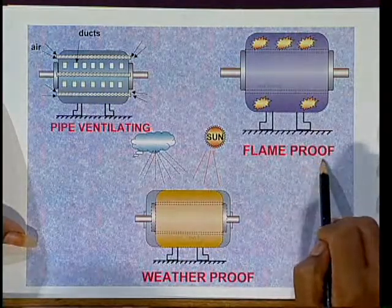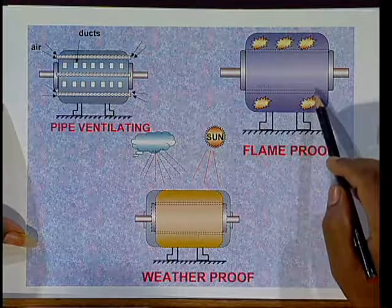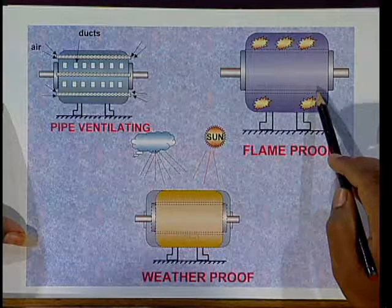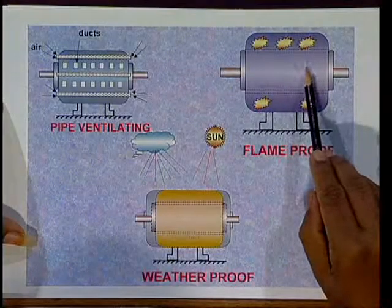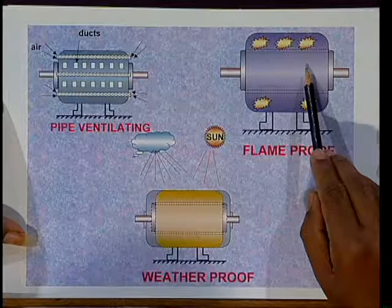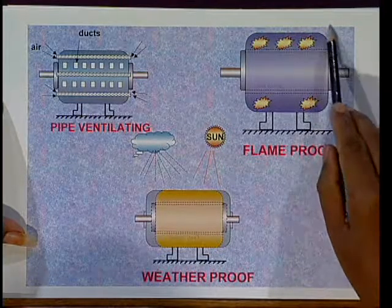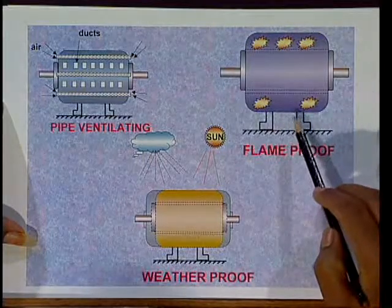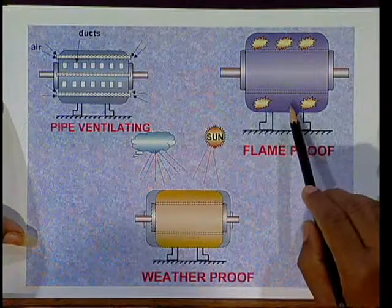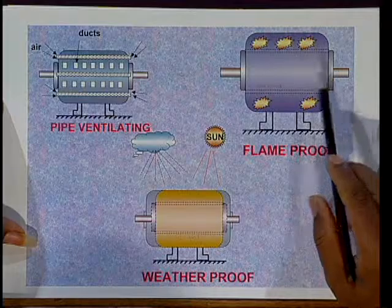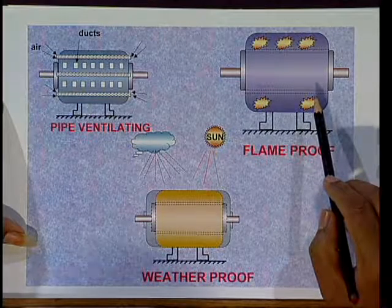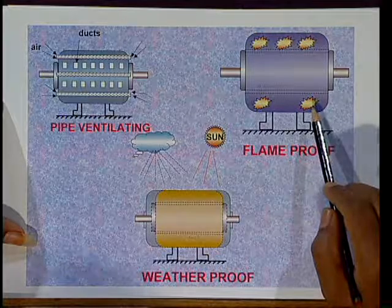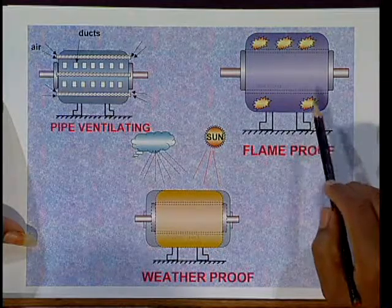In flame proof type enclosures, the motors are also totally enclosed, and the construction is such that if any explosion occurs inside the motor due to any spark, it does not ignite the gas surrounding or outside of the motor. This type of motor is generally used where combustion gases are present, such as in chemical plants or chemical power plants.